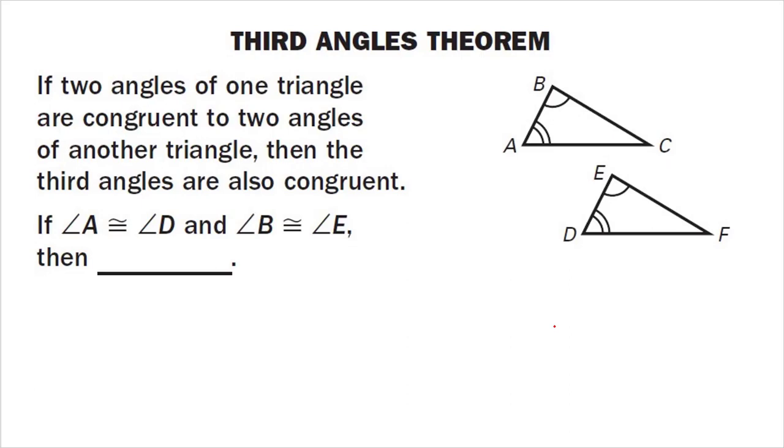Third angles theorem: If two angles of one triangle are congruent to two angles of another triangle, then the third angles are congruent. I have angle A congruent to angle D, and angle B congruent to E. They all have to add up to 180 degrees, so therefore angle C has to be congruent to angle F.